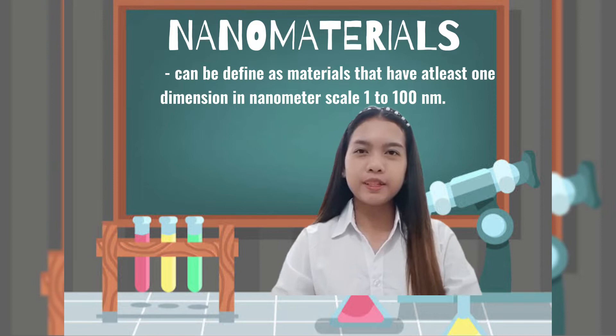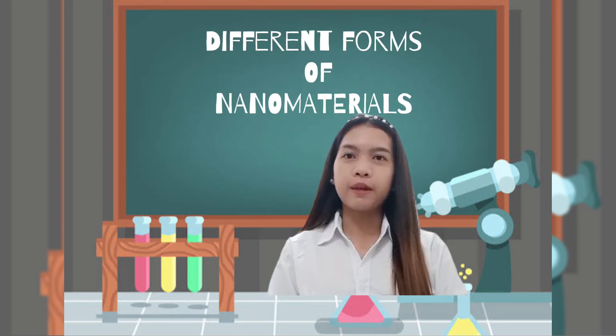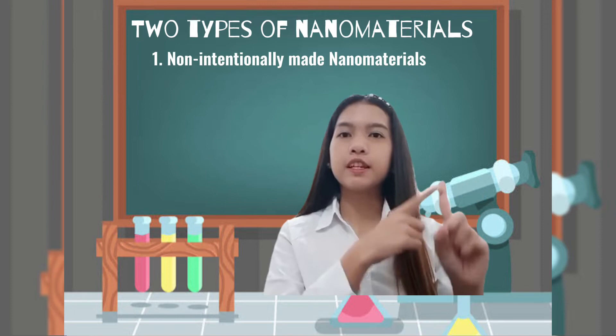What are nanomaterials? Nanomaterials can be defined as materials that have at least one dimension in nanometer scale, 1 to 100 nanometers. Nanomaterials can be seen with the use of nanotechnology because they are tiny materials but with higher potential. Nanomaterials can be classified in different forms such as particles, tubes, shells, quantum dots, powders, coatings, and more.